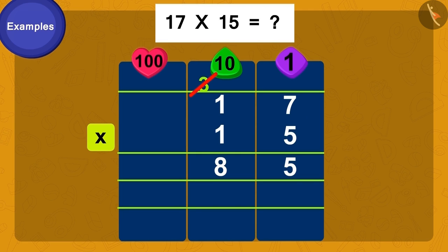Before starting the multiplication process, we write a 0 like this in the unit space. First, we multiply 1 by 7. Is it done? 7. We will write it like this.